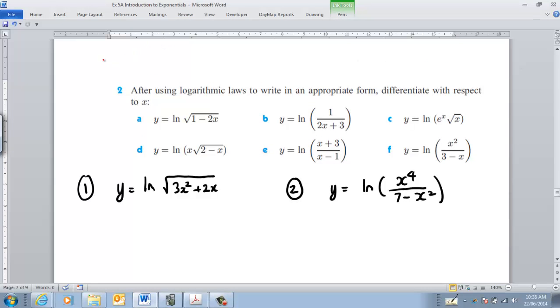If we just remember what they were: LN of A to the N equals N LN A, and then when you had LN of A over B that was equal to LN of A minus LN of B, and then if you had LN of AB that was equal to LN of A plus LN of B. Get the idea?